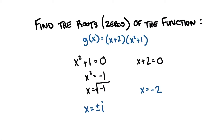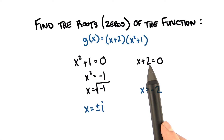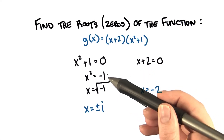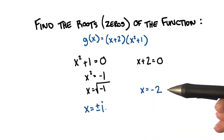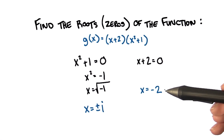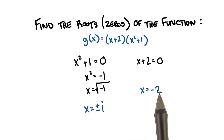So luckily, this is already factored as much as it can be. We need to solve the equations x squared plus 1 equals 0, and x plus 2 equals 0. The first one gives us i and negative i, and the second one tells us that the only real zero, or root in this case, is negative 2. Remember though, there are three solutions to this problem: i, negative i, and negative 2.